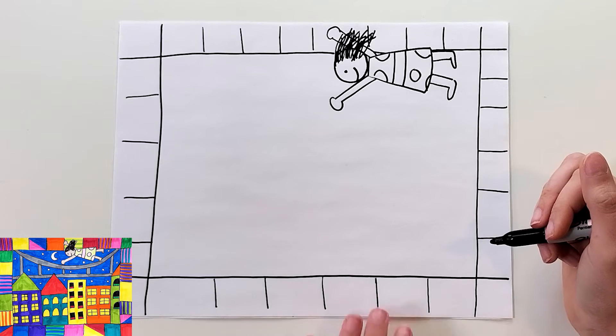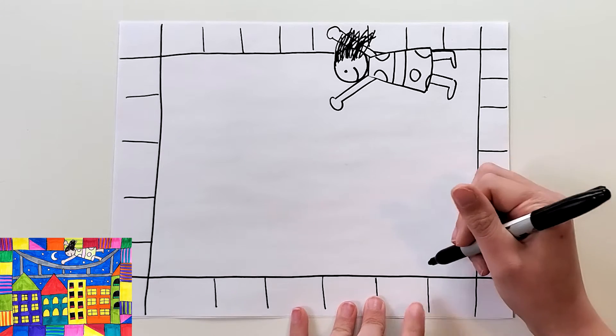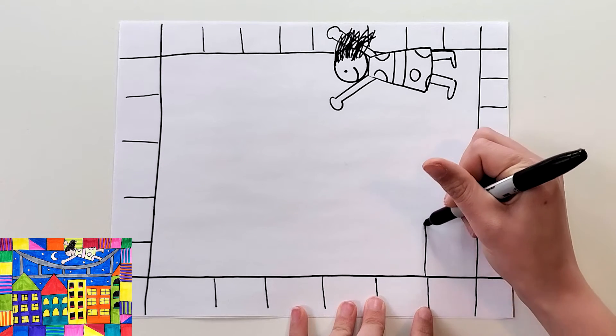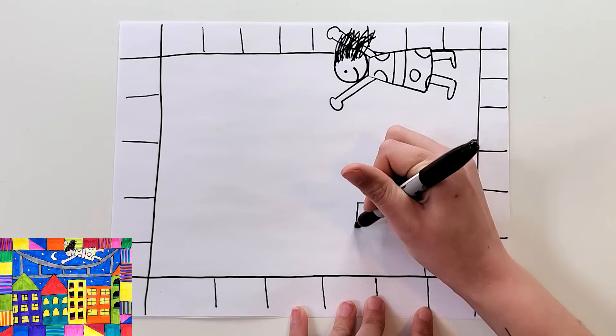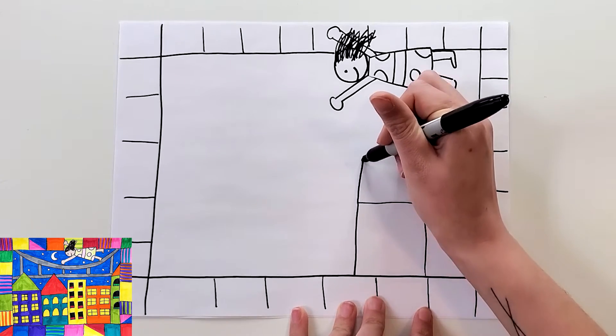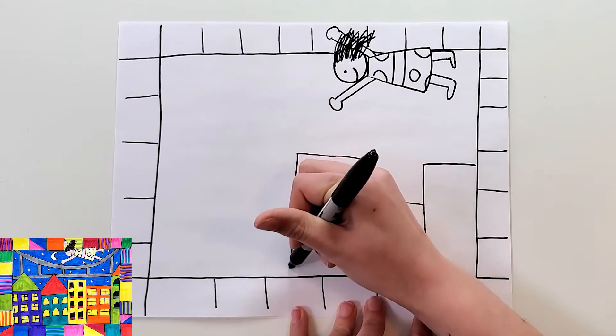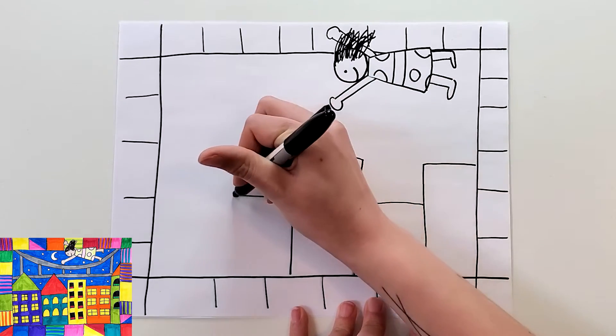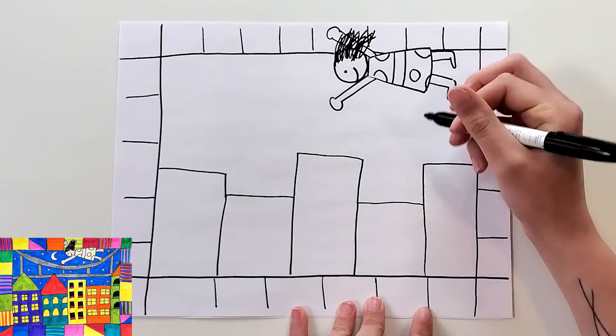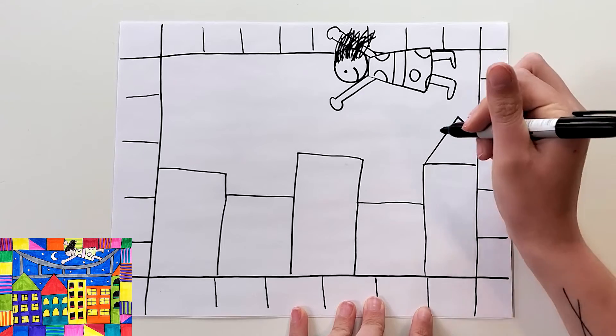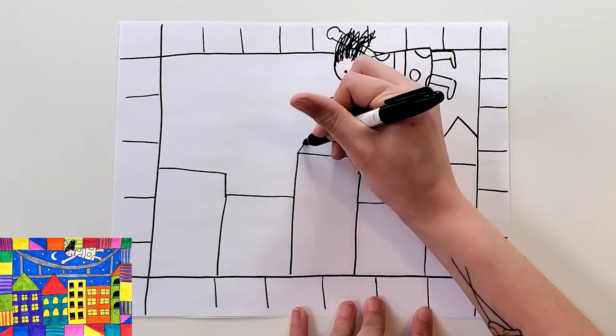Next we're going to draw the city. So we're going to draw a couple of different sized rectangles. So I'm going to draw one that's tall here and you're just going to make a couple that are different heights going all across your paper. You can add triangles on the tops of some if you want to have a different shape for the roof.